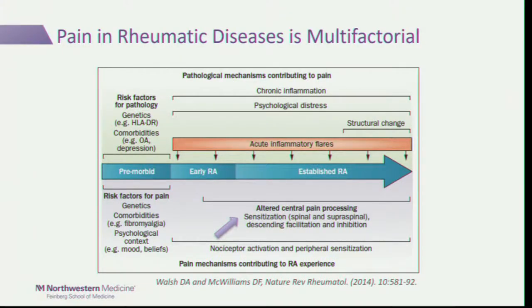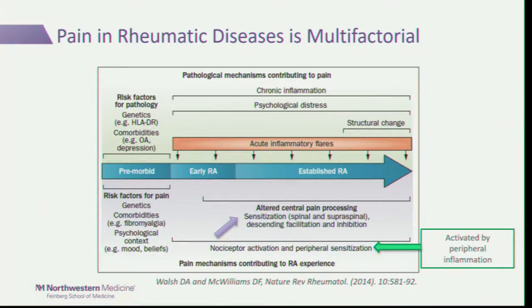This figure from a review by David Walsh and Dan McWilliams in Nature Review Rheumatology shows the many factors contributing to pain in rheumatoid arthritis and how they change during the disease course from premorbid to established RA. Obviously there is peripheral inflammation at the joints causing pain, but we don't want to lose sight of comorbidities—particularly fibromyalgia. Patients may come in with primary fibromyalgia before they even get RA, and they may later develop secondary fibromyalgia or secondary centralization after developing rheumatoid arthritis.